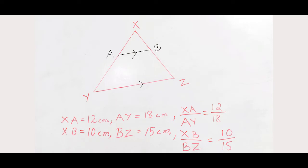So you might say that XA by AY is not equal to XB by BZ. But let us reduce this ratio to the simplest form. So how do we do that?